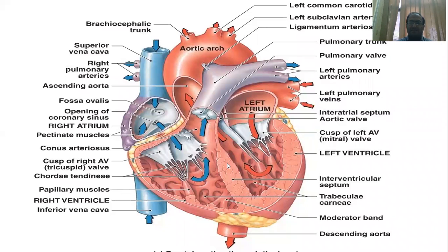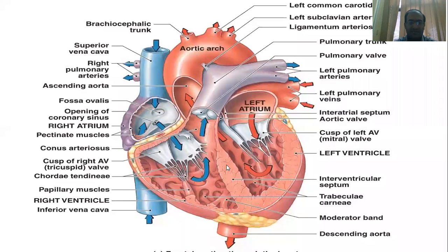The pericardium and the septum — the septum separates the skeleton of the heart. The skeleton of the heart has layers. We will look at this in detail when we discuss the conductive system of the heart in this picture.